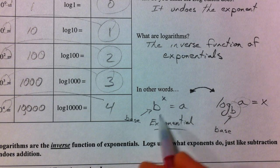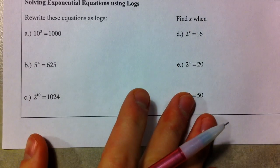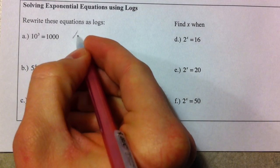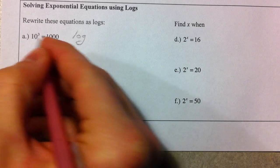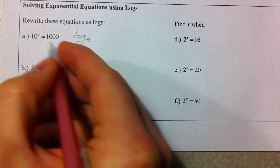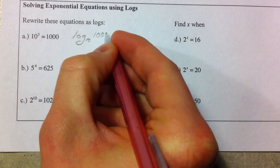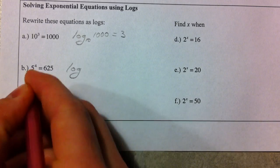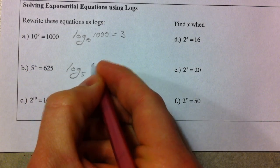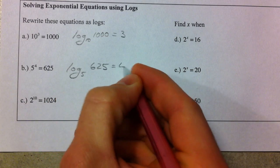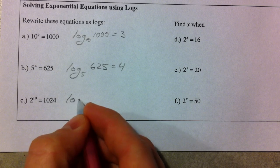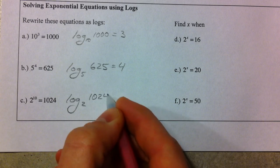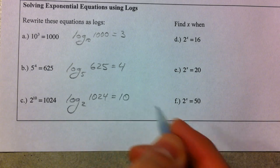So what we're going to do is just practice rewriting this like this. Rewrite these as logs. 10 to the 3rd is 1000. So the log base 10, because the base of the exponent becomes the base of the log, of 1000 equals 3. Log base 5, the base of the exponent, of 625 equals 4. Log base 2 of 1024 equals 10. And so now we want to find x. And so this is what we were talking about before.